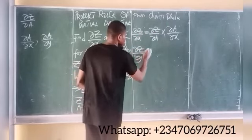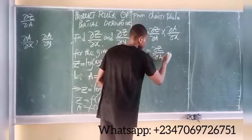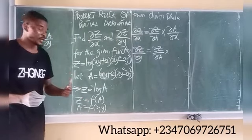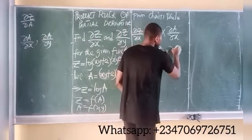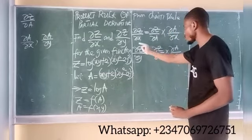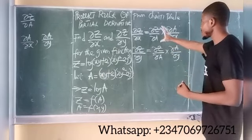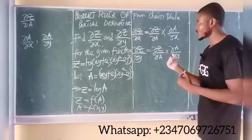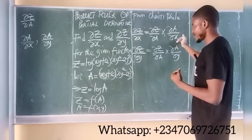Similarly, if I want to differentiate z with respect to y — since z is a function of a, I differentiate z partially with respect to a. And since a is a function of x and y and I want partial z partial y, I differentiate a with respect to y partially. That gives partial a partial y, such that partial a cancels partial a, leaving partial z partial y. These are the two chain rule formulas I'll use. First I need to find partial z partial a, then partial a partial x.